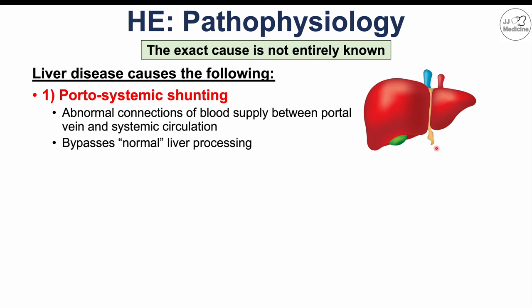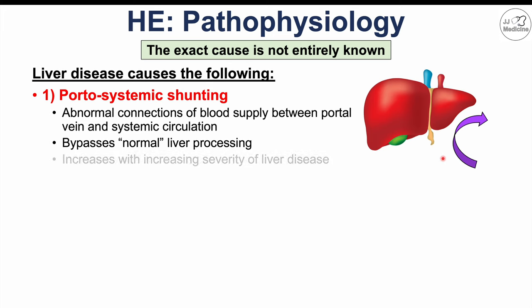That blood essentially bypasses normal liver processing. The liver is crucial for detoxification, and because of this portosystemic shunting, we don't get proper processing or detoxification. This is worse in patients with more severe liver disease — as the severity increases, the portosystemic shunting also increases.